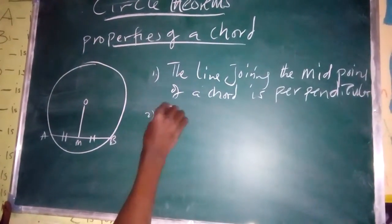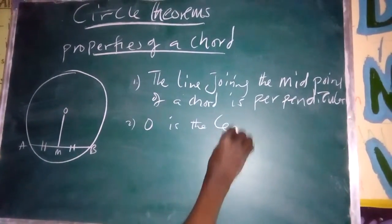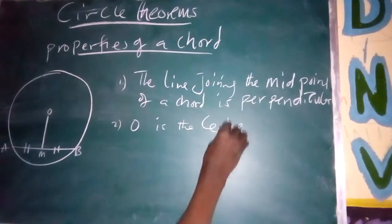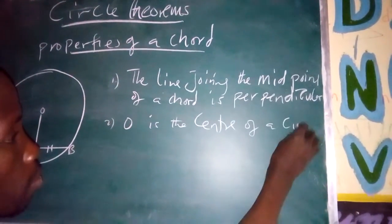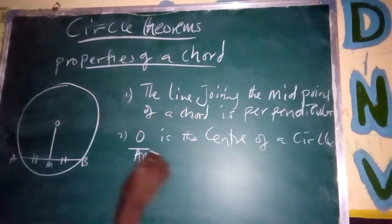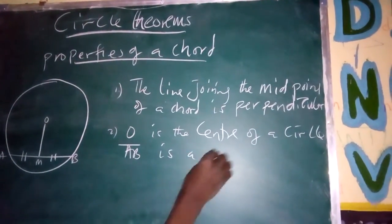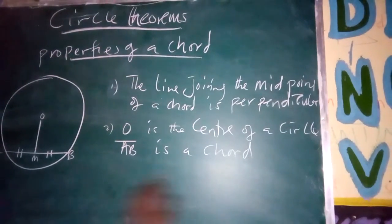Number two is O. O is the center of the circle. AB is a chord. It's a chord.